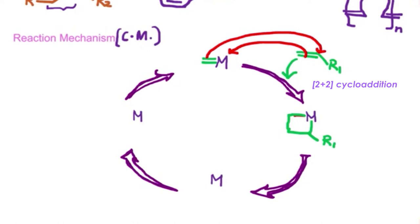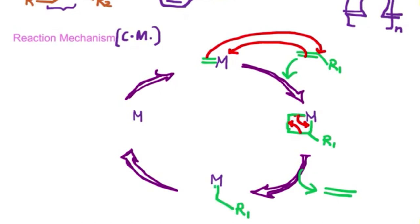Since that is a key contributing factor, this metallacyclobutane intermediate progresses onward — either reforming the same alkene we started with or creating a new alkene. By breaking one bond and forming a double bond here, and breaking another bond and forming a double bond there, we release our first product and retain the other segment at the metal center. This process is called cycloreversion.